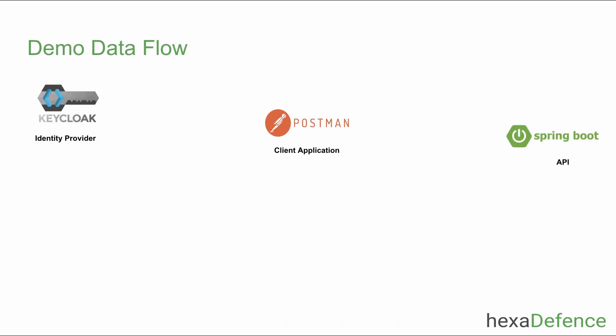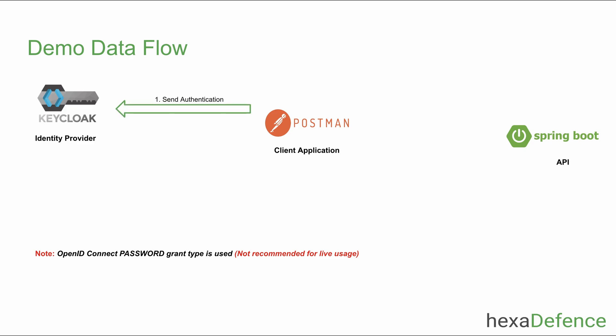In the demonstration, I have used Keycloak as the identity provider, Postman as the client application, and a Spring Boot app as the backend API. I have used the OpenID Connect password grant type. As the first step, Postman sends a request to the identity provider and gets an access token. After that, Postman sends an HTTP request to the Spring Boot backend API including the token. Spring Boot validates the token and if valid, sends a response.